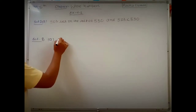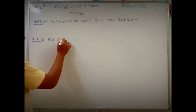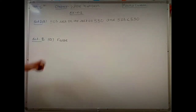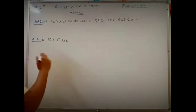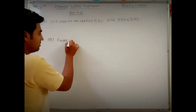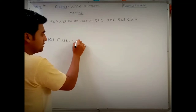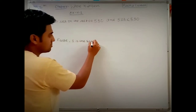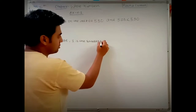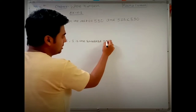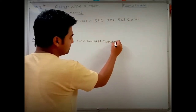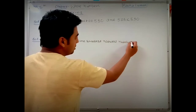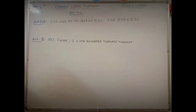Part a is false. Where a statement is false, we also correct it. The correct statement is: one is the smallest natural number.